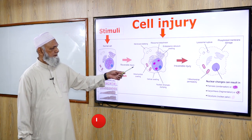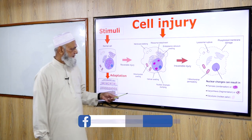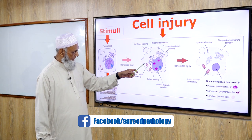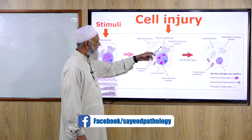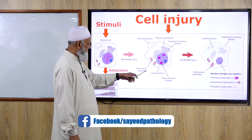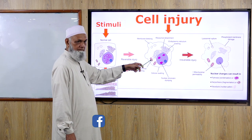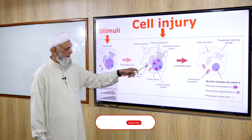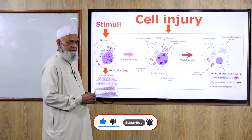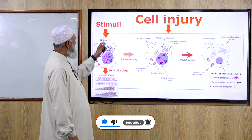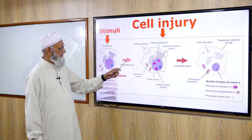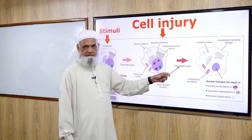Cell injury may be reversible or irreversible. Reversible cell injury shows cellular swelling, organelle swelling, detachment of ribosomes, swelling of mitochondria, mitochondrial accumulation of calcium, and chromatin clumping. These are the signs of reversible cell injury.